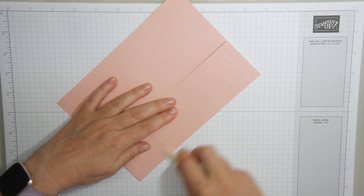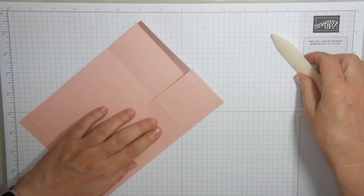I'm going to fold and burnish all these score lines and I'm using my bone folder because I want these score lines really flat and crisp.